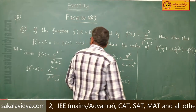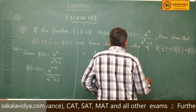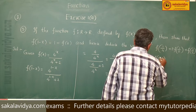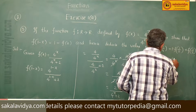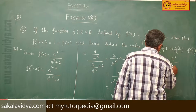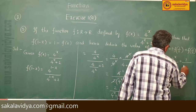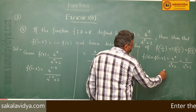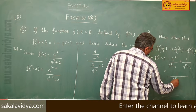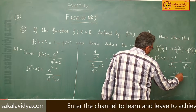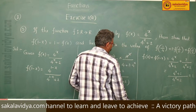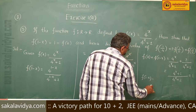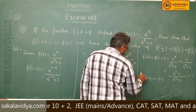Now let us find f of x plus f of 1 minus x. f of x is given as 4 power x by 4 power x plus 2, plus 2 by 4 power x plus 2, since f of 1 minus x is this value. Taking LCM as 4 power x plus 2, we get 1. So f of 1 minus x equals 1 minus f of x. This has been proved.